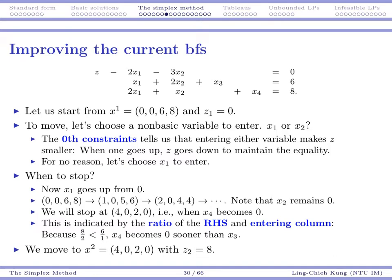When x1 goes up, Z should always go up because of this negative coefficient. So that means it's good. If we enter x1, that's going to help us. If we enter x2, that's also helping us. So for no reason, let's assume I want to choose x1 to enter.